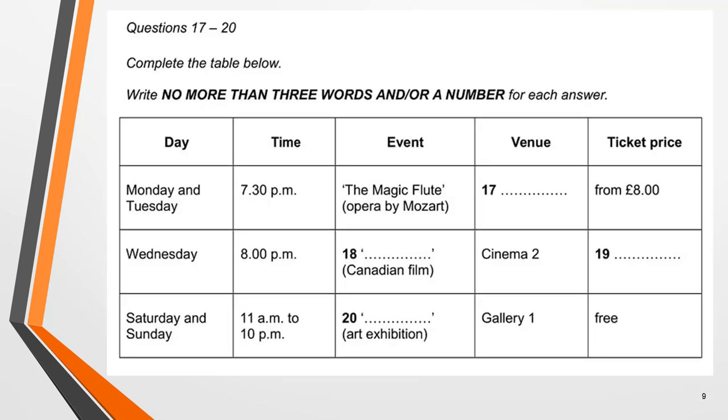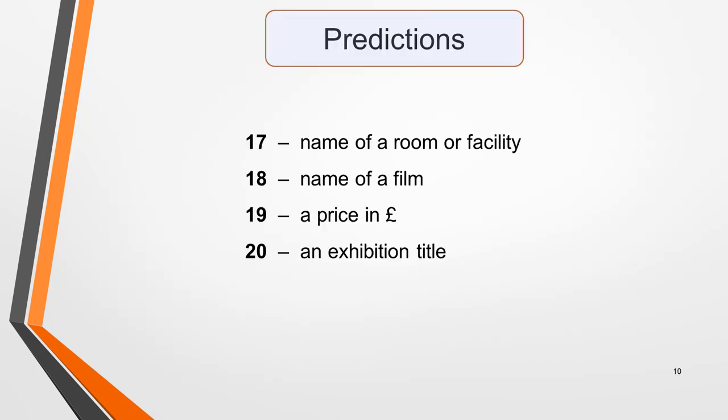Have a go at predicting some of the answers in our practice question. There are four answers to fill in, 17 to 20. Pause the video to do this, then have a look at my predictions on the next slide. Here are my predictions: answer 17 will be the name of a room or facility, 18 will be the name of a film, 19 a price in pounds, and 20 an exhibition title. You can see that just a few seconds spent making predictions can give you a lot of information about what you need to listen out for, and will greatly improve the chances of identifying the correct answers.